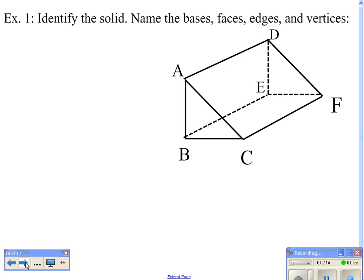If we are asked to identify this solid, you will see that this is a prism. Specifically, since both bases are triangles, that is what makes this a triangular prism.